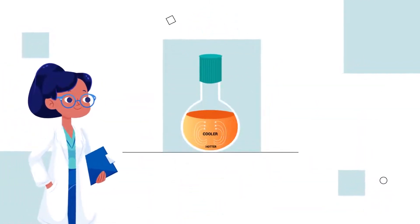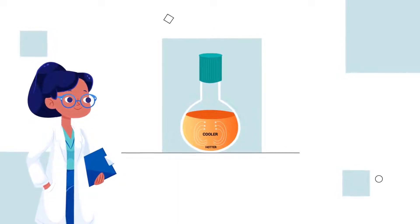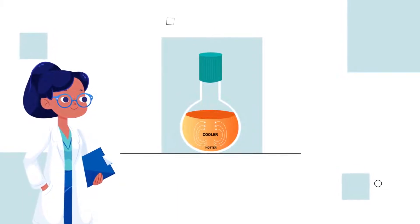As with other sterilization cycles, you'll want to place the biological indicator in the most difficult to sterilize location.